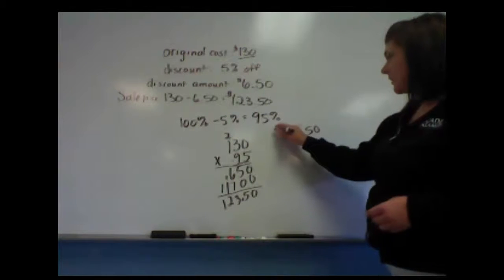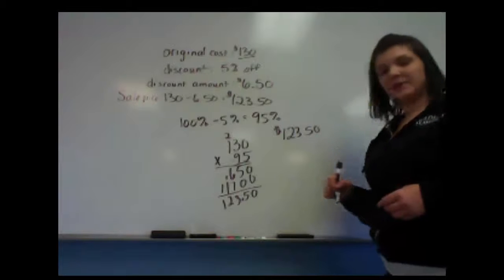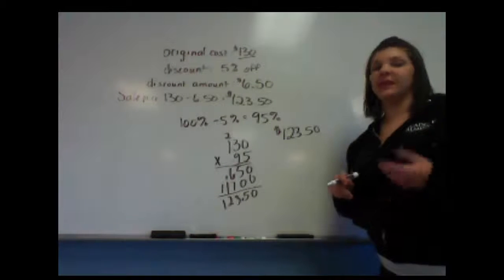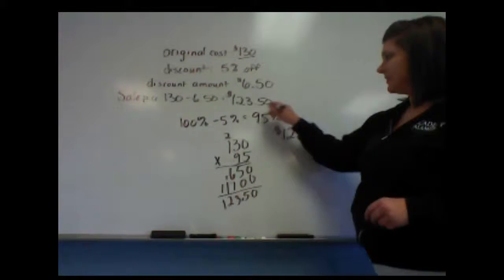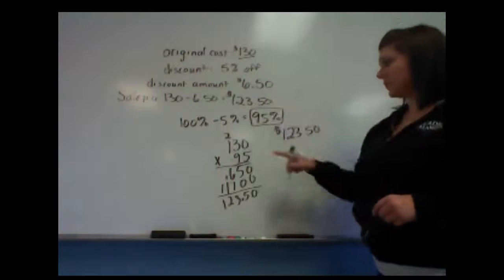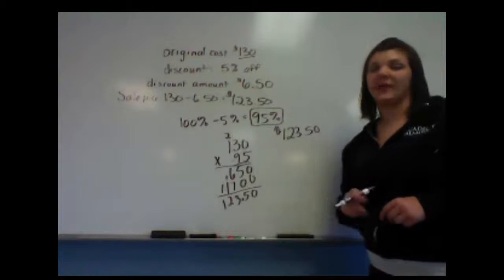So that is the way that we've used a single multiplier to find the sale price of a discounted item. Again, 95%, which our multiplier would be .95 or 95 hundredths.